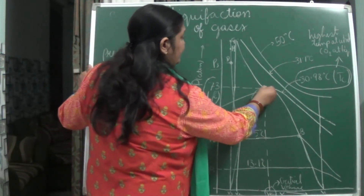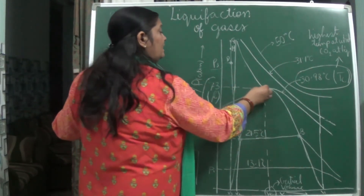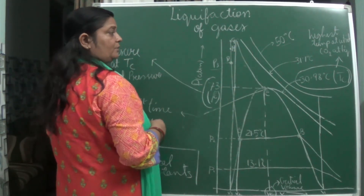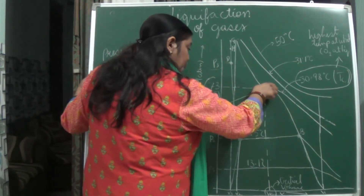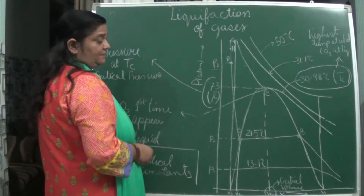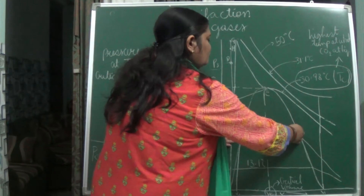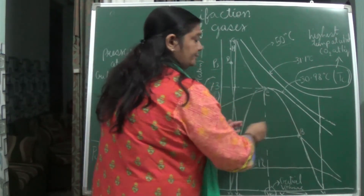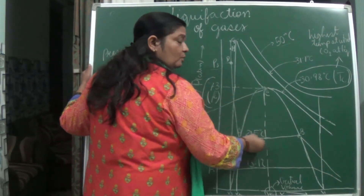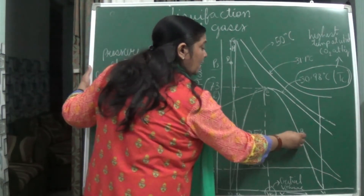At temperature 30.98 degrees Celsius, when he went on increasing the pressure, he could see it existing in the liquid form. Then at temperature 21.5 degrees Celsius, comparatively the volume was more and the area covered was more, meaning carbon dioxide is in both liquid form and gaseous form, existing in both forms simultaneously.